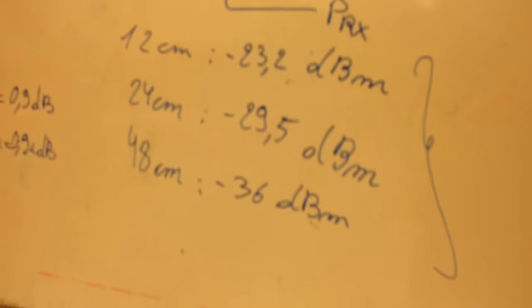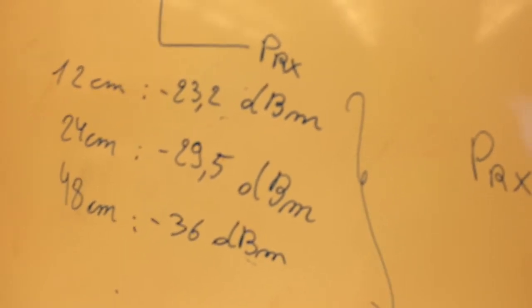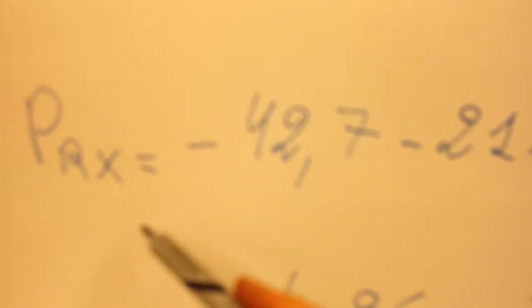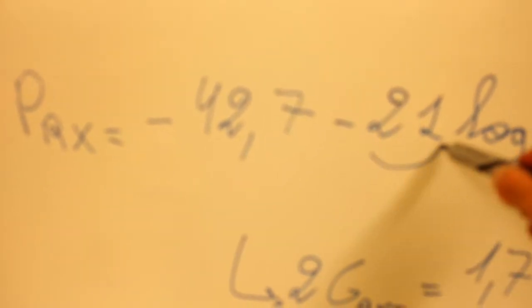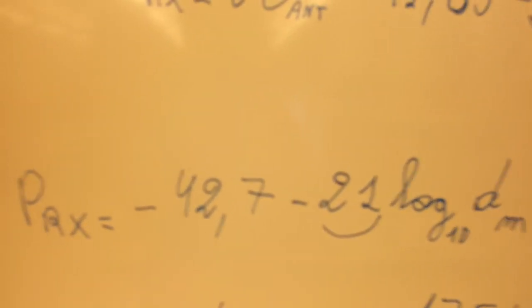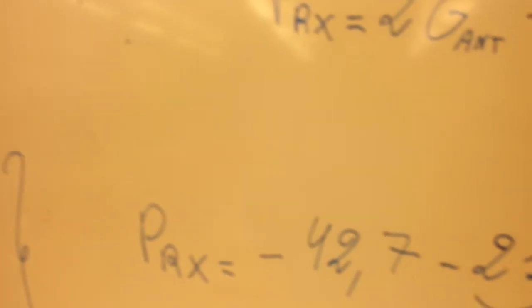Now from the measurement we are going to find the linear regression that matches all these points. We can get this from Matlab. So from Matlab and doing a polynomial fitting we get this equation. As you can see we got here minus 21 that is quite close to the theoretical one that is minus 20. So we can say that we are in free space. So now if we make the difference between these two equations.